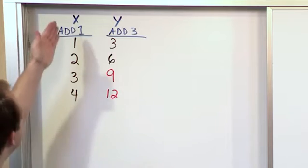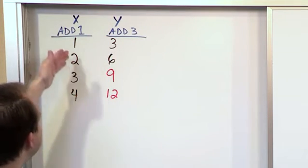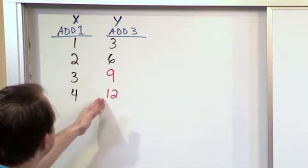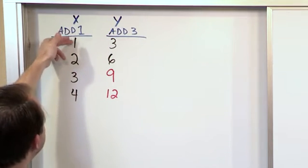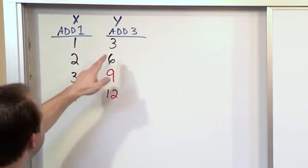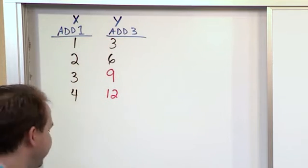Now we have two columns. One we're calling X. One we're calling Y. And we have four numbers in each column. And this column follows a rule where we're increasing by 1. And this column follows a rule that we're increasing by 3.